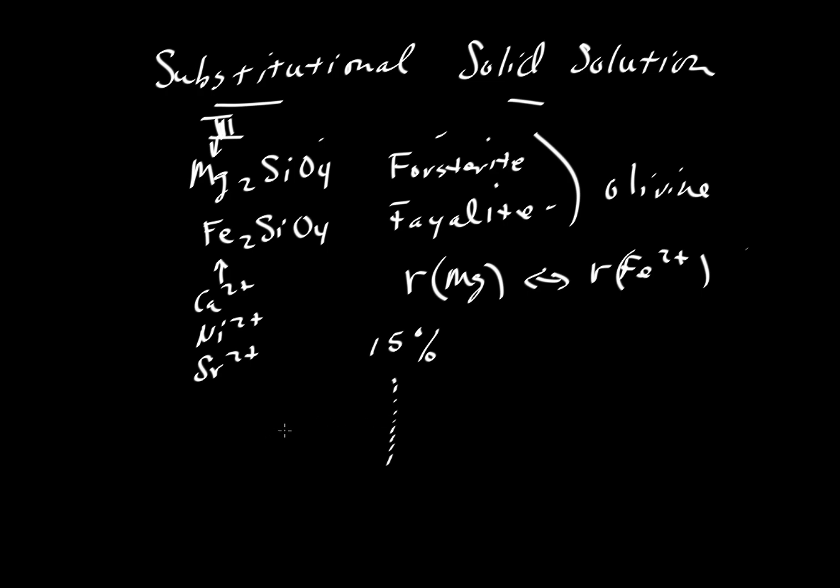If we're less than 15% difference in the radii, we have complete solid solution. That is, we can take as many magnesium or iron atoms as we like and mix them and match in any proportion that we like, from 100% magnesium to 100% iron or anything in between.